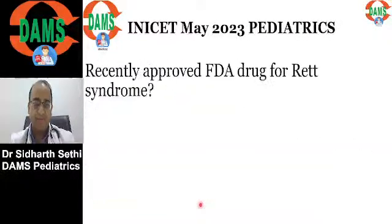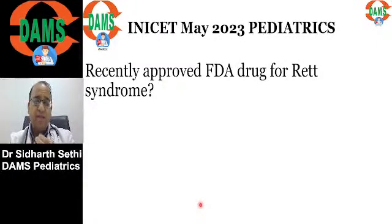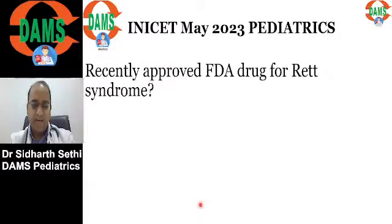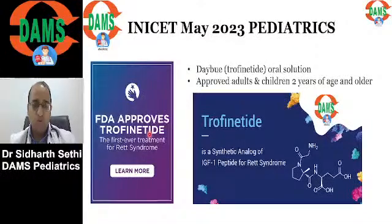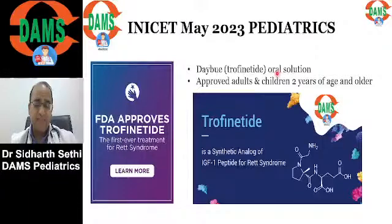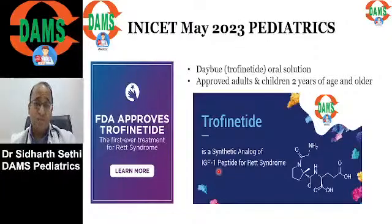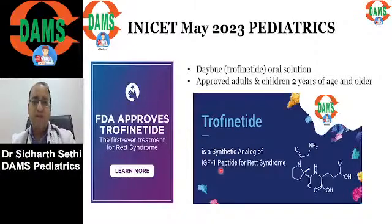Rett syndrome is discussed very commonly, and there was a question about the recently FDA-approved drug. Trofinetide has been approved by the US FDA. This oral suspension is approved for children two years and older. It is a synthetic analog of IGF-1 — insulin-like growth factor 1 peptide — and is now available for Rett syndrome children.